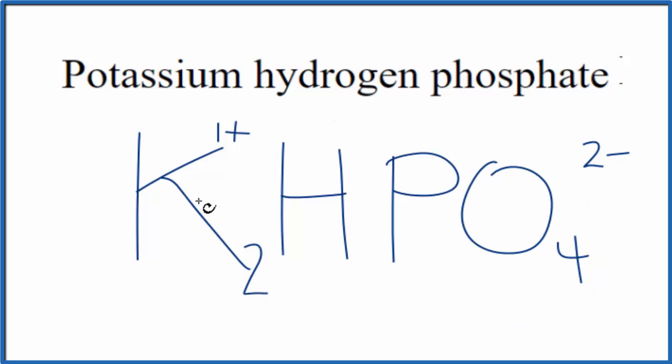So we need 2 potassium ions. 2 times 1 plus, that's 2 plus. Then we have this 2 minus here. Charge adds up, gives us zero, net charge is zero.